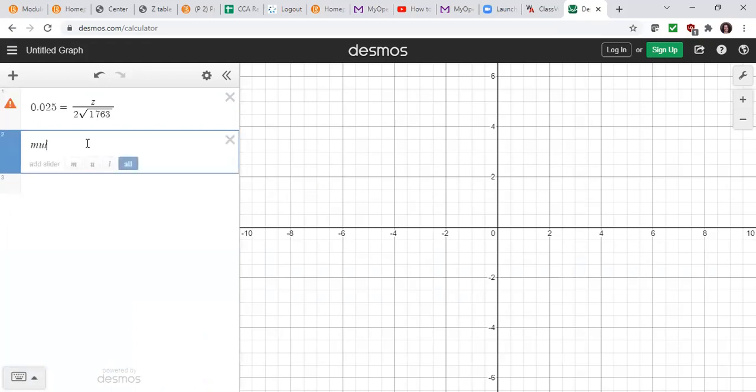So we're going to multiply both sides by this bottom of the fraction, because when you do that, the top of the fraction and the bottom of the fraction are cancelled. So the 2 divided by 2 is 1, the square root divided by square root is 1.